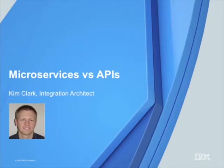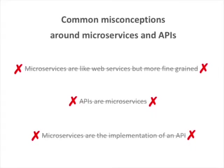Hi, my name is Kim Clark. I'm an integration architect working for IBM. It still surprises me just how many times I come across misconceptions around microservices and APIs — often hearing phrases like microservices are fine-grained web services, or that APIs themselves are equivalent to microservices. These all show fundamental misconceptions, and so I've created this to really break that out and talk about what the key differences are in those two concepts.